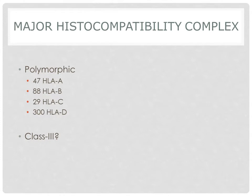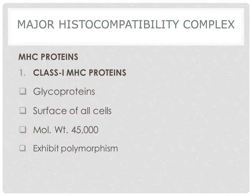Class 3 MHC is located between class 1 and class 2 genes. Regarding class 1 MHC proteins, they are glycoproteins present on the surface of all nucleated cells. Approximately 20 proteins are encoded by the A locus, 40 by the B locus, and 8 by the C locus.